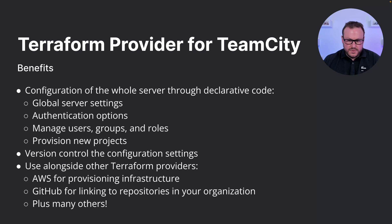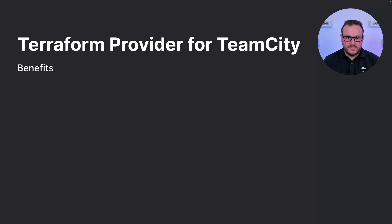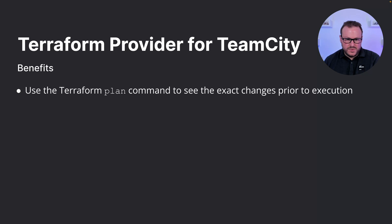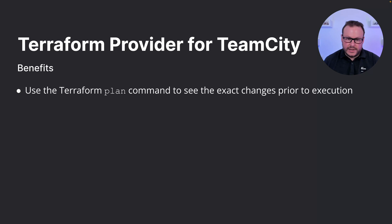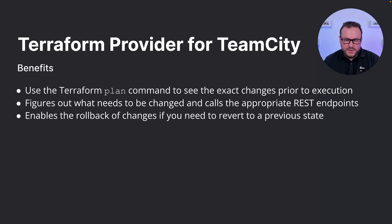Many other providers are also available. You can use the Terraform plan command to see the exact changes prior to execution — something that would be difficult to accomplish using the TeamCity REST API directly. The provider figures out what needs to be changed and calls the appropriate TeamCity REST endpoints for you, and it also enables rollback of changes if you ever need to revert to a previous state of the server configuration.